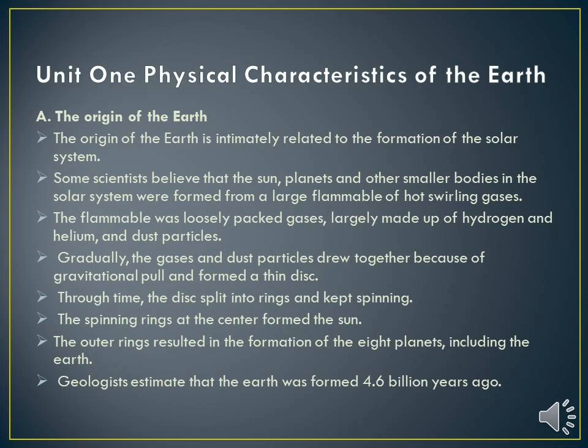The flammable was loosely packed gases, largely made up of hydrogen, helium, and dust particles. These gases and dust particles gradually drew together because of gravitational pull and formed a tiny disk. Through time, the disk split into rings and kept spinning. Using the spinning ring as the center, the sun formed, and the outer ring resulted in the formation of the eight planets, which includes the earth.